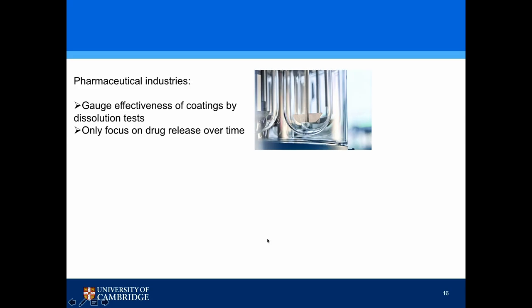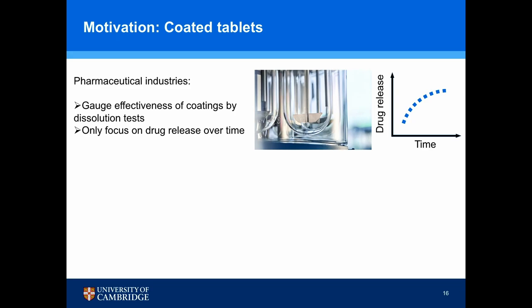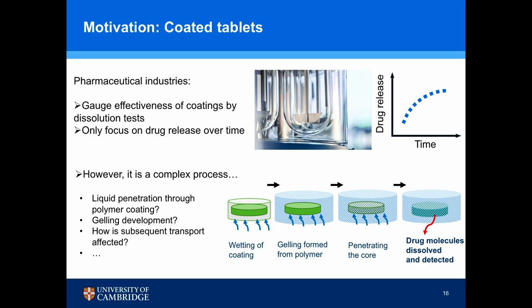Now moving on to coated tablets — why are we interested in them? In the pharmaceutical industry, the effectiveness of coating is gauged by dissolution testing, which gives a plot of percentage drug release over time. However, dissolution is a complex process, especially for layered structures like coated tablets. A number of physical steps takes place even before the first drug molecules are dissolved and detected. In this study, we aim to explore more insights into this process.